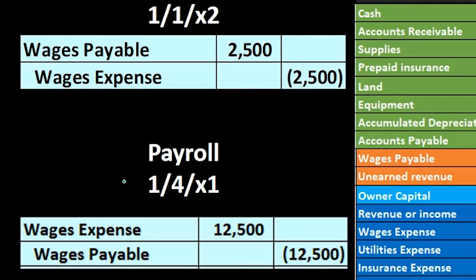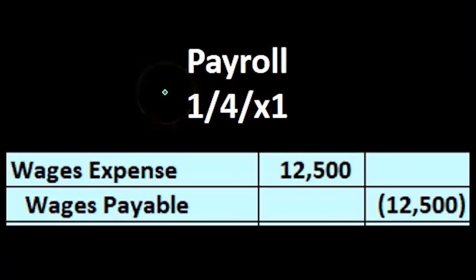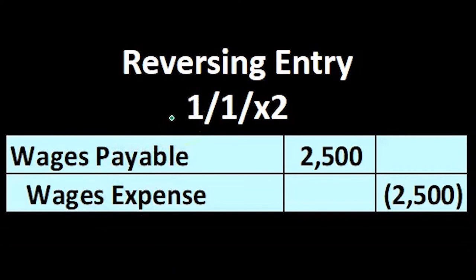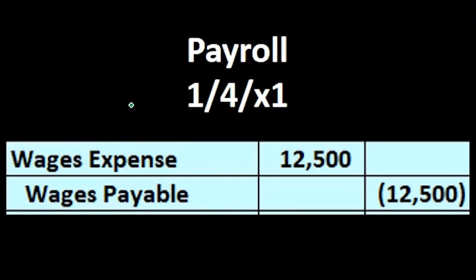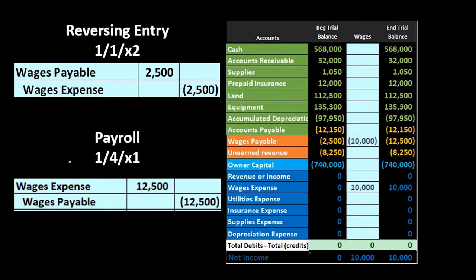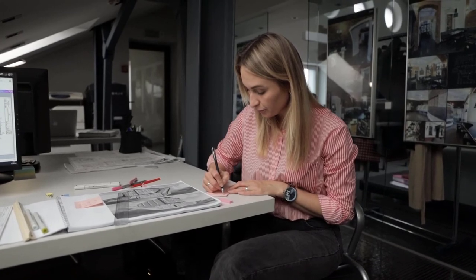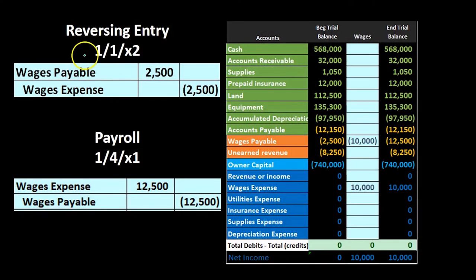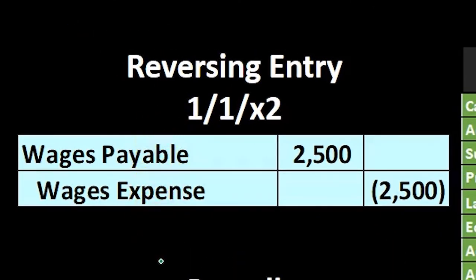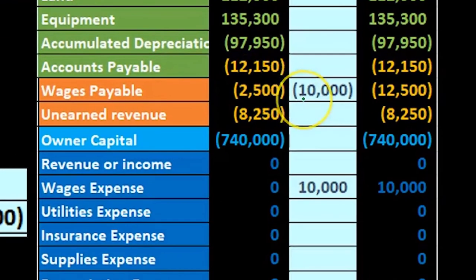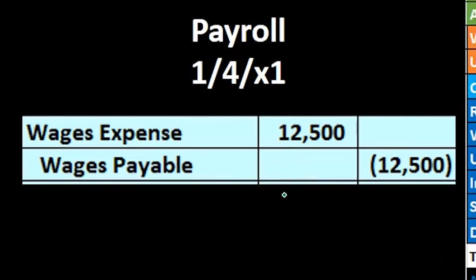Once payroll is processed as of January 4th, these two entries will cancel each other out. Between January 1st and January 4th, our accrual process is not proper — it's wrong — but after that point it will be correct. That's in alignment with our time period assumption where we chunk up time periods into months and years and make the financial statements as proper as possible as of the end of those periods. If we post both entries, wages payable is reversed back down to zero, and wages expense has a credit from the reversing entry.